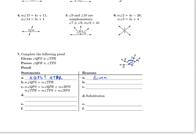Step 2: the measure of angle QPS equals the measure of angle TPR — and this was by definition of congruence. Whenever we go from congruent angles to equal measures, or vice versa, the reason is always definition of congruent. That's why the earlier examples just used equal signs and didn't need this step. Now, QPS is made up of angle QPR and angle RPS, so this was the angle addition postulate.